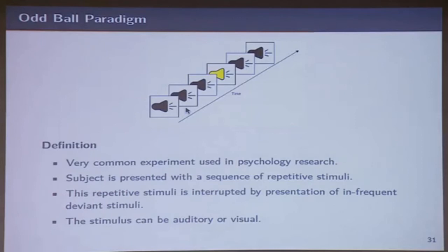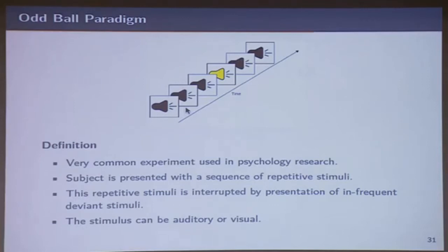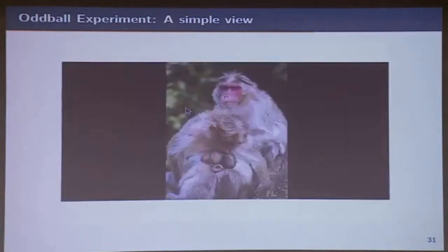The next success was on the auditory oddball paradigm. Basically you have a standard beep beep beep, then occasionally make a slightly different sound, and does the person detect it? There's something called a P300 wave, which is a positive-going signal. This is very commonly used in psychology research: subjects are presented with a sequence of repetitive stimuli, this is interrupted by presenting an infrequent one, and the objective is to detect did they see that infrequent stimulus and when did it occur. It's called the P300 because you can detect it after a maximum of 300 milliseconds after the stimulus has been presented.